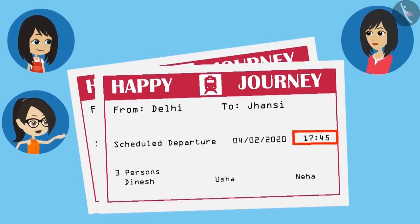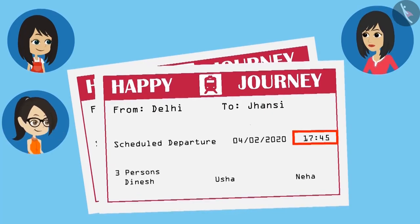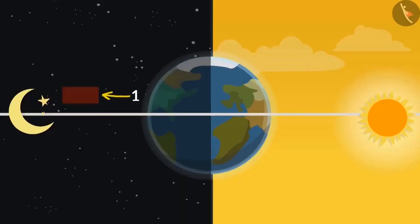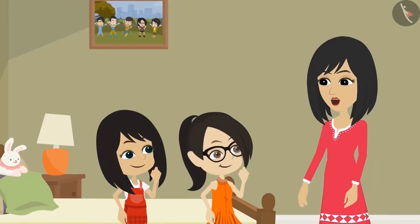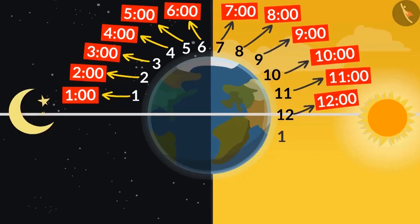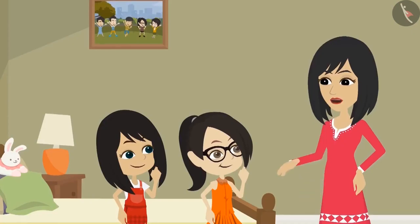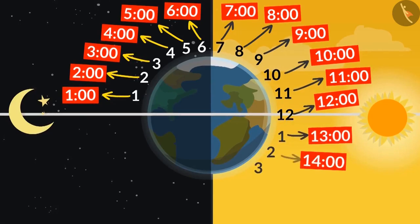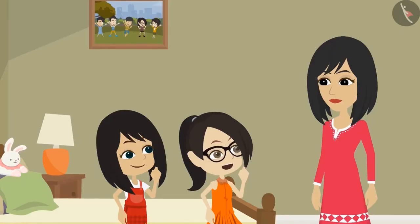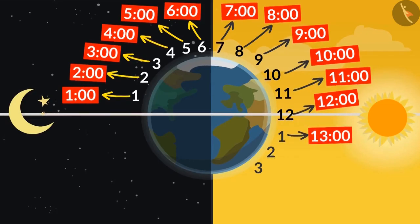Yes. But how will we know whether it is evening or morning time? It is very easy. 1 o'clock at night is written as 1:00. 2 o'clock at night is written as 2:00. Till 12 in the afternoon it is written as 12:00. Now tell me, what is the hour after 12? It is 1. Yes. But when the time is written in 24 hours format, the 12 hours of the afternoon are not written as 1, 2, 3 again. Instead they are written as 13, 14, 15. So does this mean that in the 24 hours format, 1 o'clock in the afternoon will be written as 13:00?